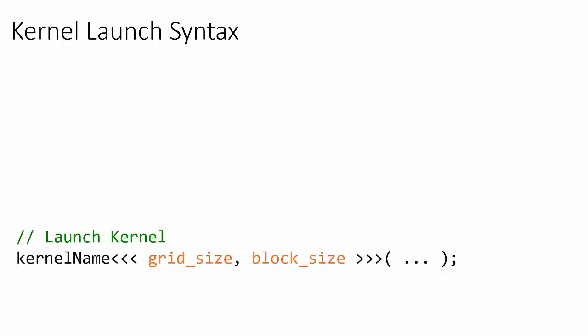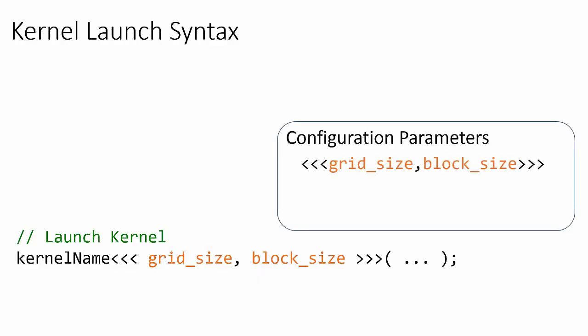Let's now consider the syntax of a kernel launch. A kernel launch is just like calling any normal C function. The launch begins with the name of the kernel being executed, and parameters passed into the kernel are placed inside the parentheses. The only difference is that we must specify the kernel's grid and block dimensions, which are passed into the kernel launch inside the triple chevron brackets.